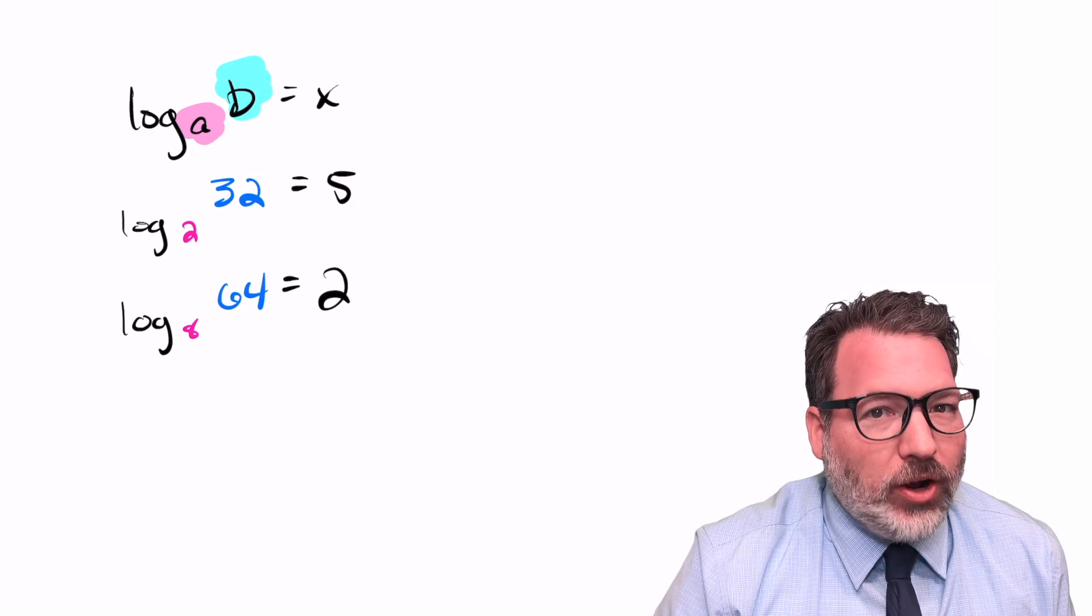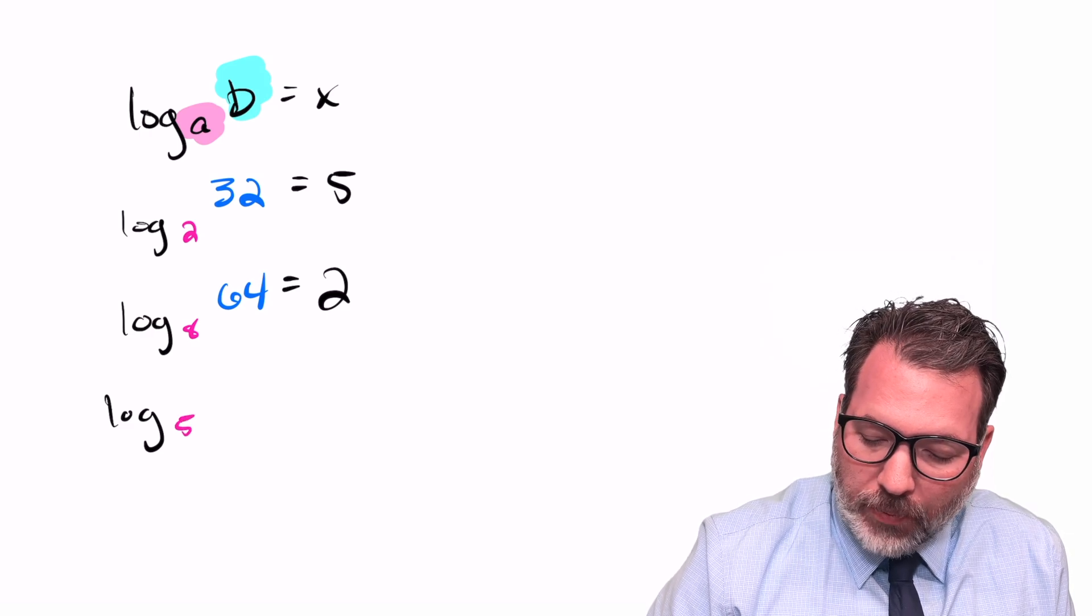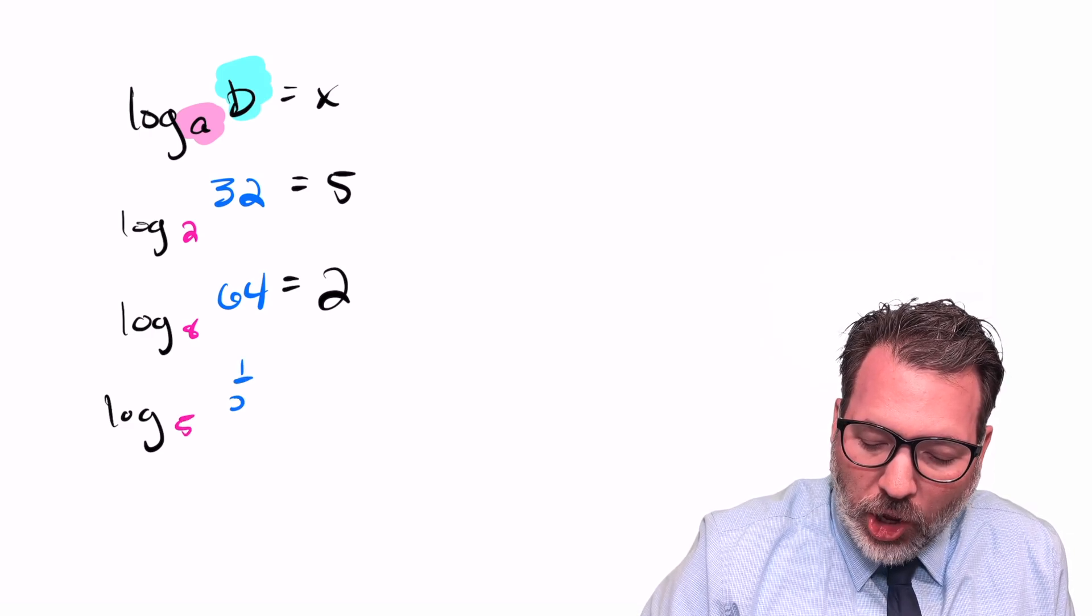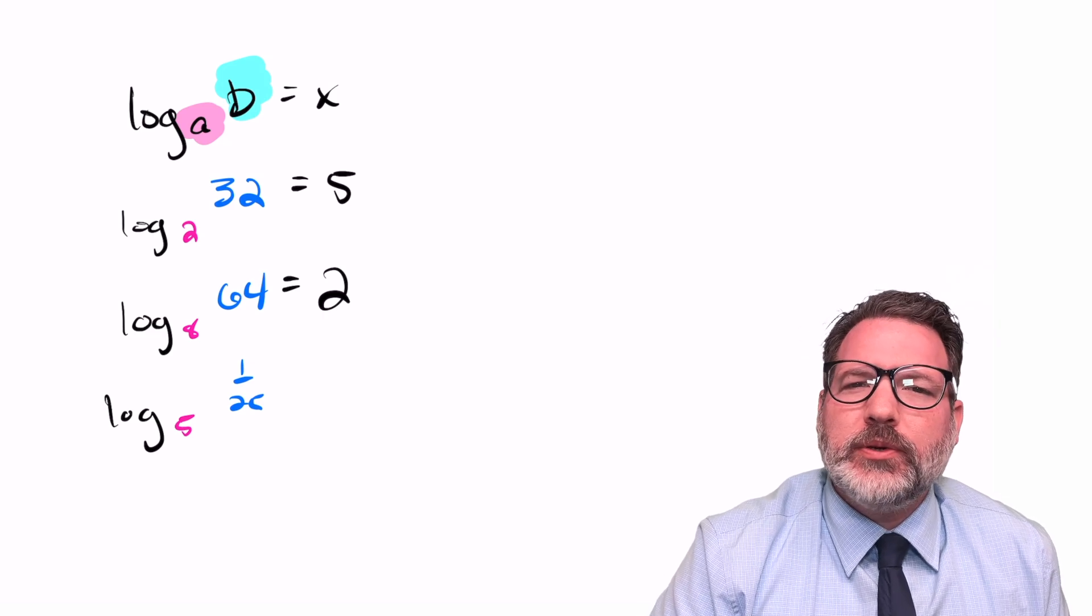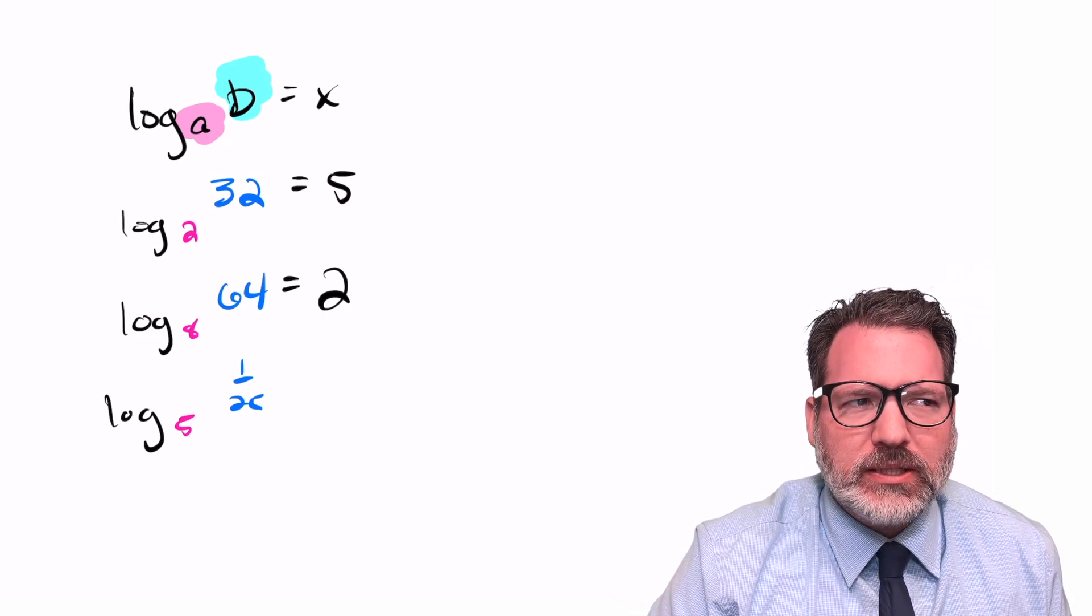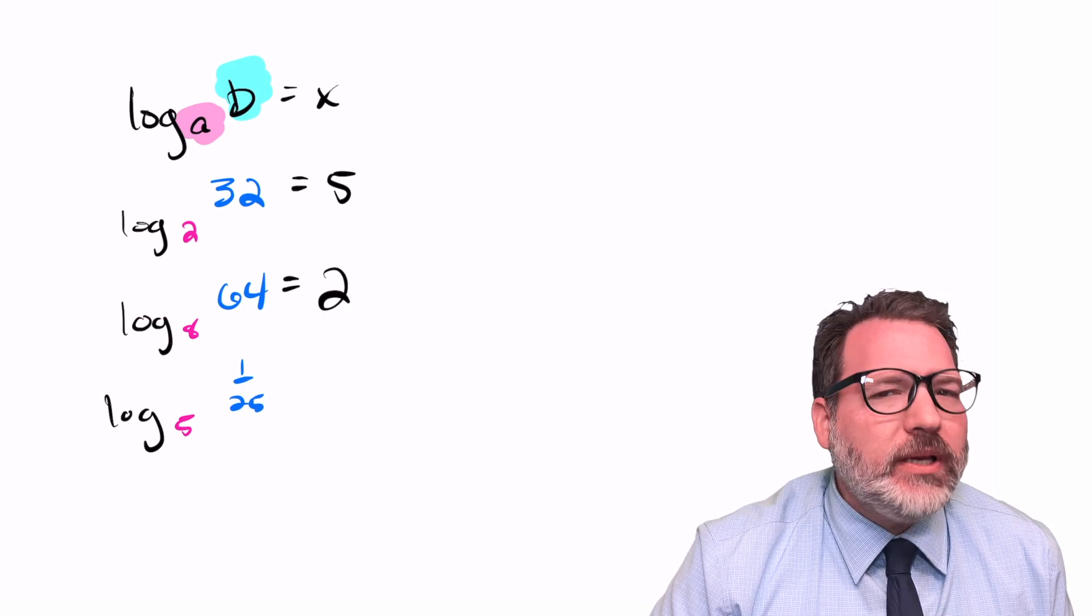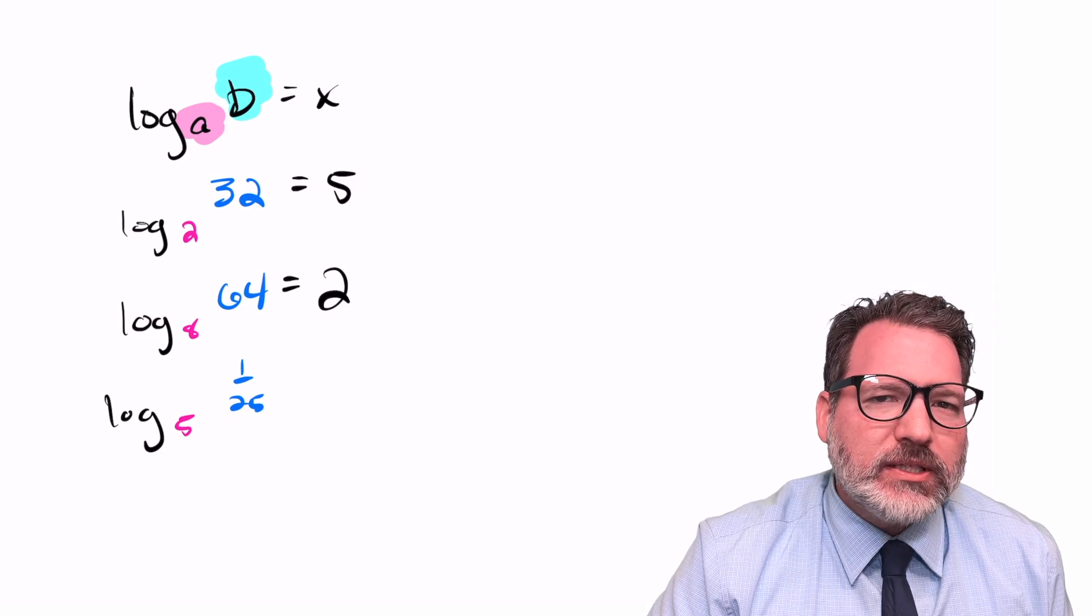But of course, not all powers are so nice. So you could also easily imagine a question like log base 5 of 1 over 25. What are we supposed to do now? You can't multiply a 5 times itself some number of times to get 1/25th as a result. But there is still a way that will keep this relatively simple.